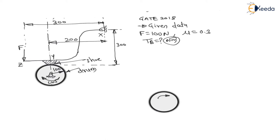The radius of the drum is given as 100 mm. Similarly, drawing the free body diagram for the XYZ lever: at X it is pivoted, at Z there is applied force F of 100N. Since the shoe is in contact with the brake drum, by action-reaction pair, on the shoe there will be equal and opposite reactions: normal reaction N and friction force mu*N.